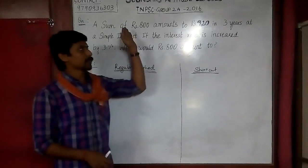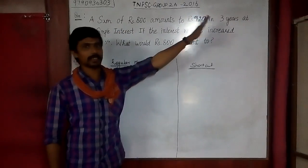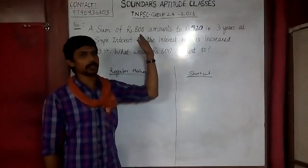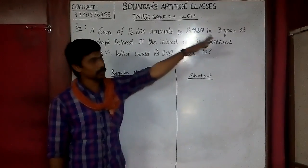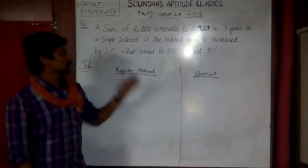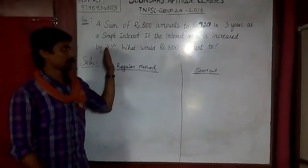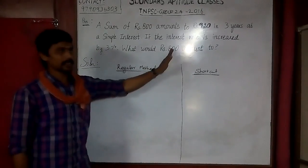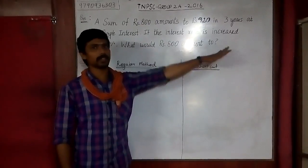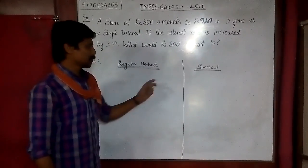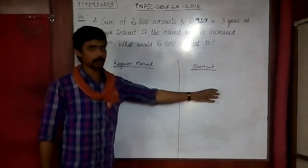If you invest Rs.800 and it converts to 920 in 3 years — Rs.800 converted to 920 in 3 years. Suppose the interest rate is increased by 3%, we will solve this using 2 methods: first the regular approach, then the shortcut approach.